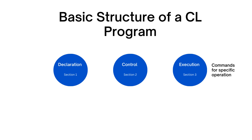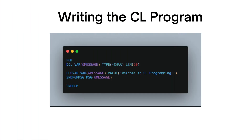It's time to write our first CL program. Let's start with a simple example that displays a message on the screen. Here's the code. In this code, we declare a variable called message of type char with a length of 50 characters. We then use the change variable command to assign the message 'welcome to CL programming' to our variable. Finally, the send program message command sends the message to the user's screen.